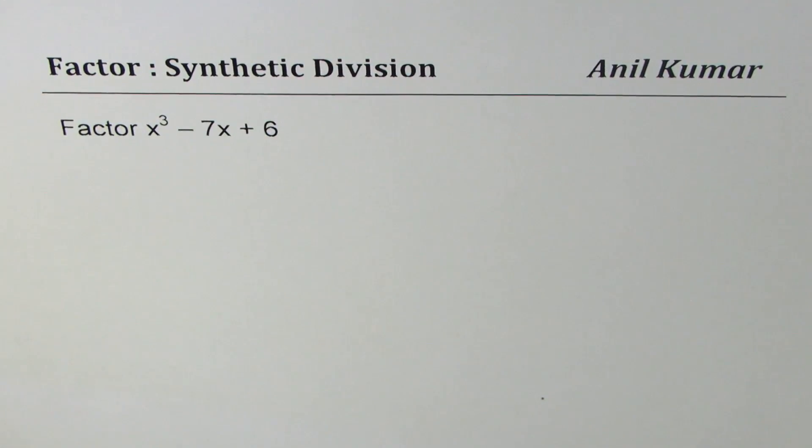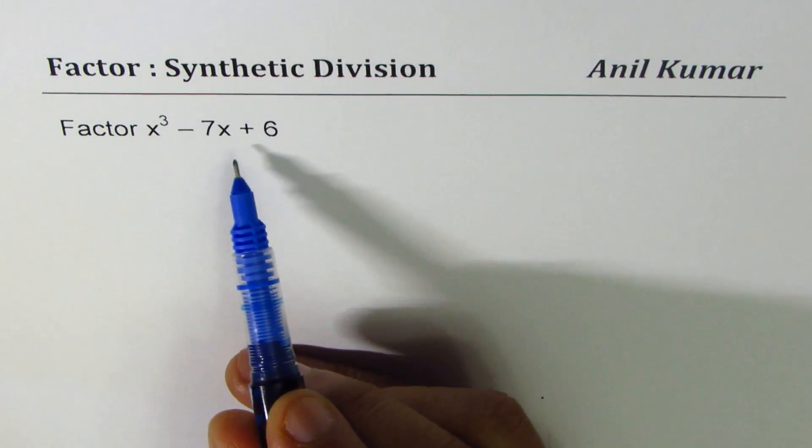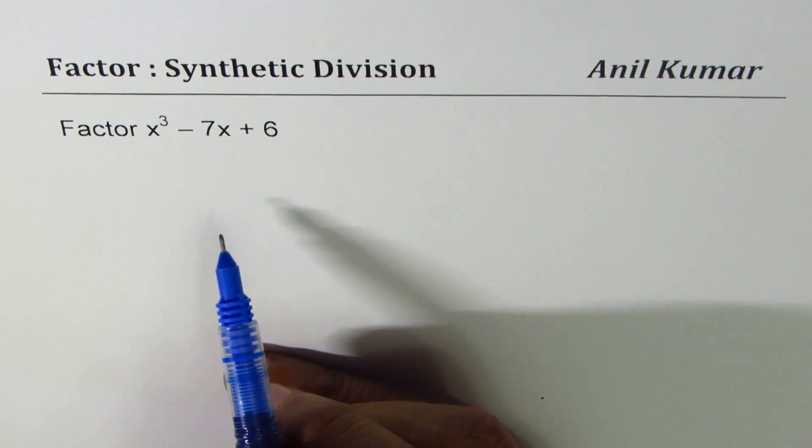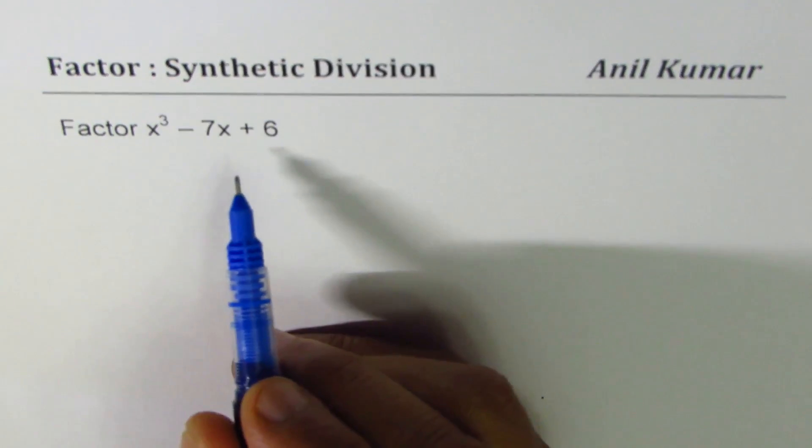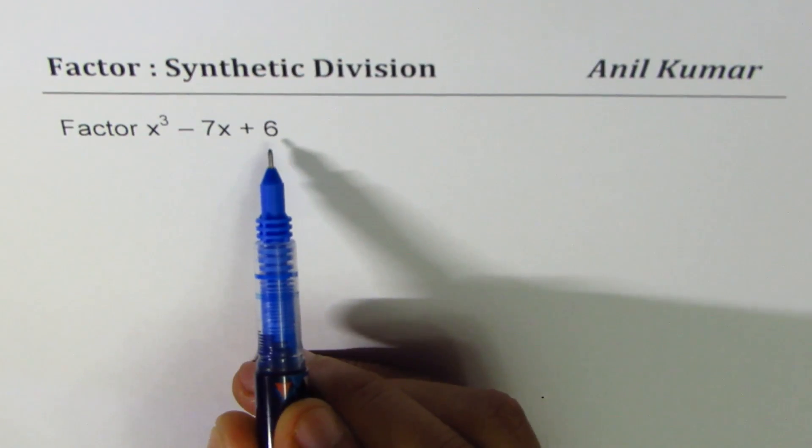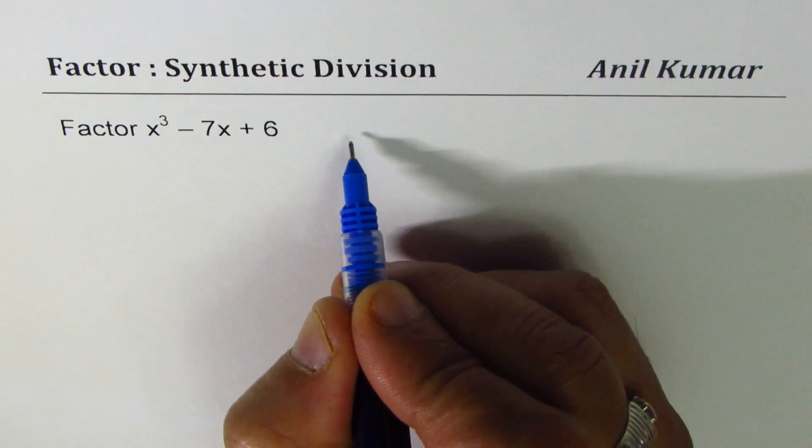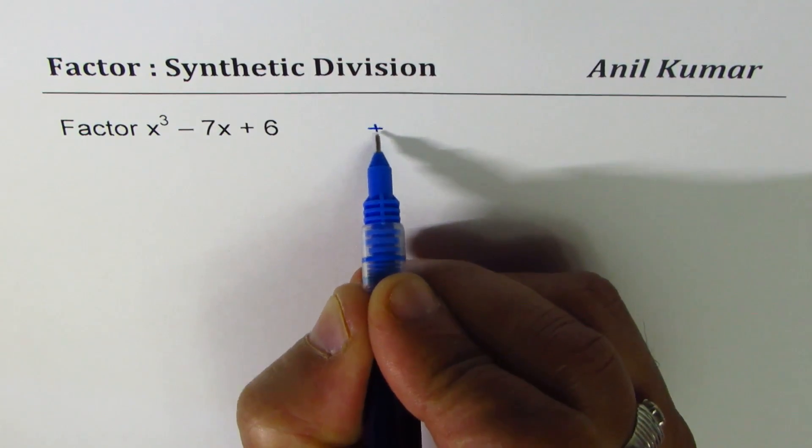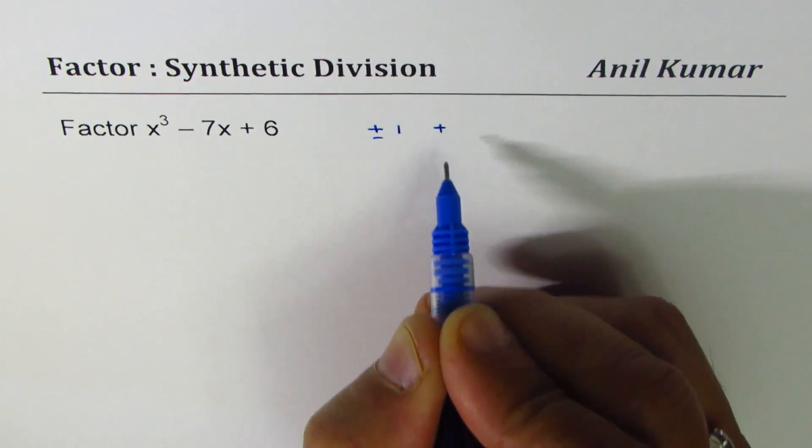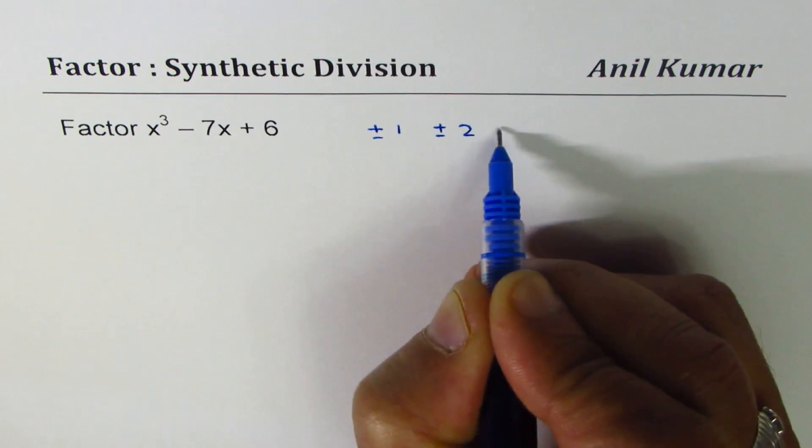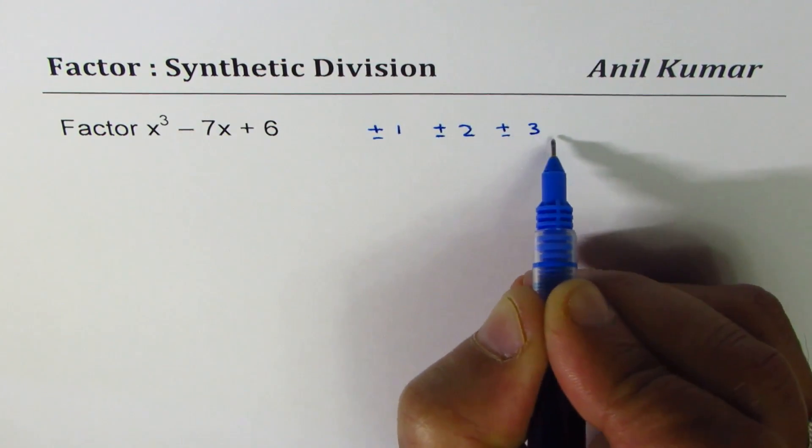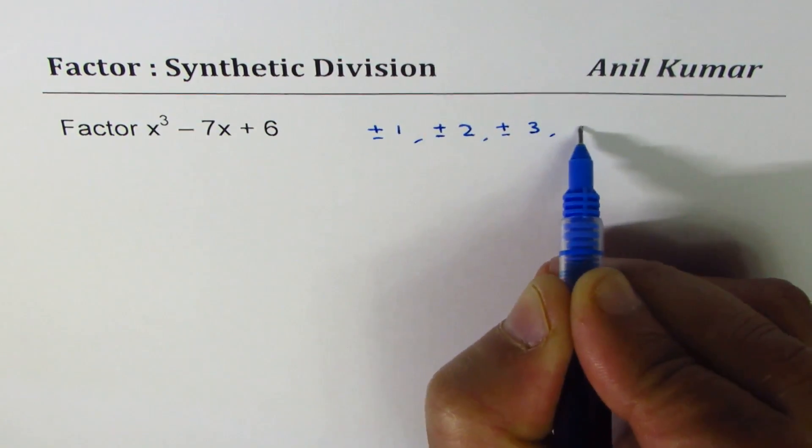I'm Anil Kumar. In this video we'll factor x³ - 7x + 6. First let's try to find what are possible factors for 6. So the possible factors for 6 are ±1, ±2, ±3, and ±6.